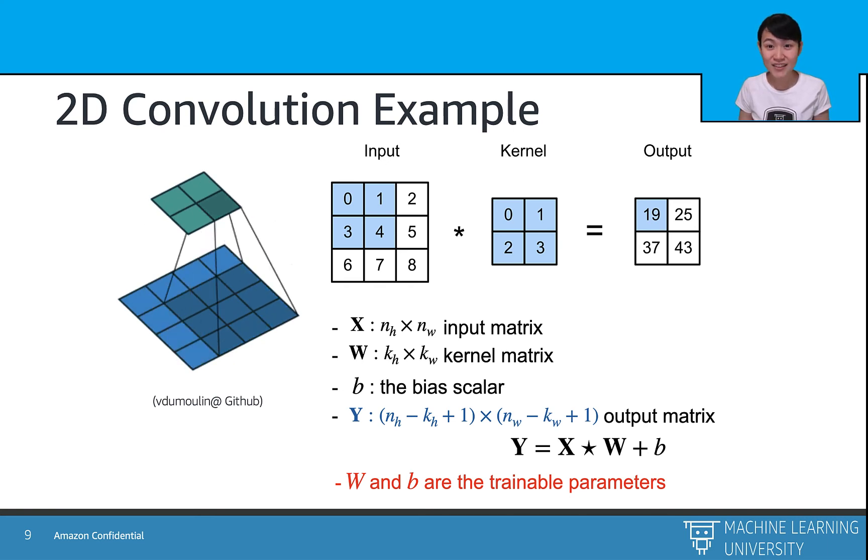Here W and b are the trainable parameters. So what does trainable parameters mean? It means that we can apply the same optimization techniques as what we learned in the neural network section, such as gradient descent, and gradually adjust the parameters of the filters. And the filters can detect whether some pixels are the edge of a Waldo's head, or other pixels are the skins of a Waldo's face.